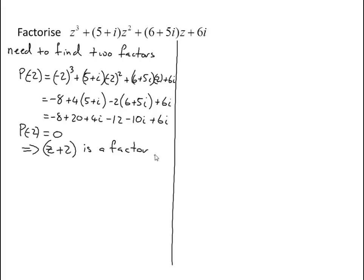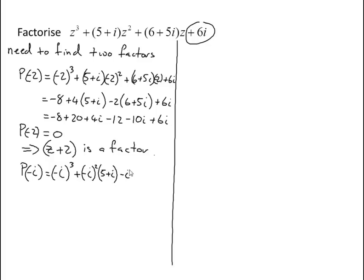I'm going to try the same thing with another factor of 6i — what about putting minus i in? I'll get minus i cubed, plus (minus i squared) times (5 plus i), plus 6i — that's minus i times (6 plus 5i) — plus 6i. Minus i cubed is minus i times minus i times minus i, which gives me i. And i squared is minus 1.